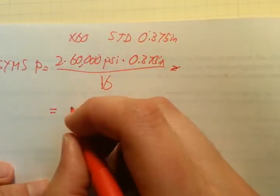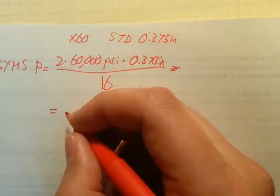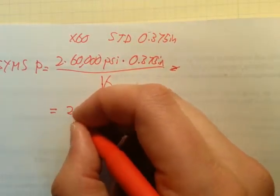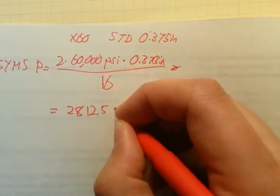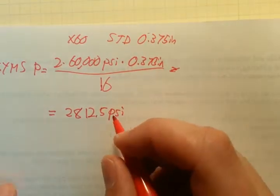That's going to give us 2812.5 PSI, which we're just going to round to 2812.